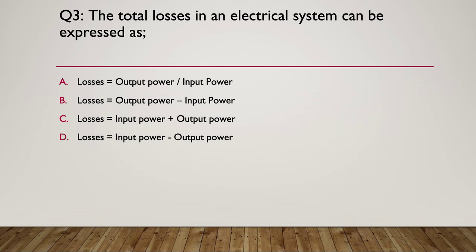Question three: the total losses in an electrical system can be expressed as: A) losses equal power out divided by power in, B) losses equal output power minus input power, C) losses equal input power plus output power, or D) losses equal input power minus output power. Pause here while you think about it.